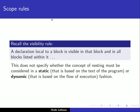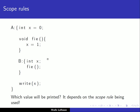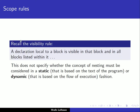We definitely need to talk about scope rules. Recall the visibility rule discussed earlier: a declaration local to a block is visible in that block and in all blocks nested within it. However, this does not specify whether the concept of nesting must be considered in a static way — based on the text of the program — or in a dynamic way, based on the flow of execution.